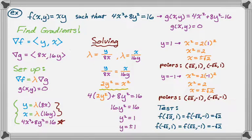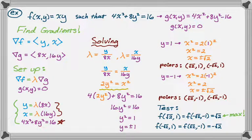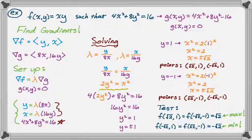So the biggest value is √2 — that's the maximum of f(x,y) = xy subject to 4x² + 8y² = 16, occurring at (√2, 1) and (−√2, −1). The smallest value is −√2, which is the minimum. You can model this in GeoGebra to visualize it — the constraint is an elliptical cylinder and the intersection confirms these results. That's Lagrange multipliers — hope this was helpful, and good luck.